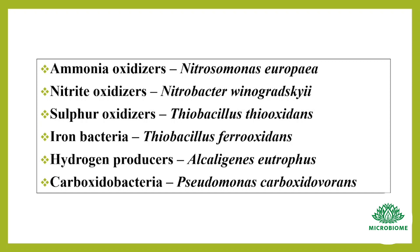Specific examples include: ammonia oxidizers such as Nitrosomonas europaea, nitrite oxidizers such as Nitrobacter winogradskyi, sulfur oxidizers such as Thiobacillus thiooxidans, iron bacteria such as Thiobacillus ferrooxidans, hydrogen producers such as Alcaligenes eutrophus, and carboxidobacteria such as Pseudomonas carboxydovorans.